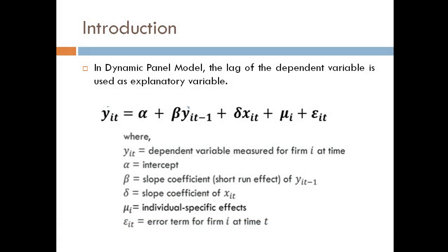In a dynamic panel model, the lag of the dependent variable is used as an explanatory variable. It can be represented as: y_it = alpha + beta * y_i(t-1) + lambda * x_it + mu_i + error term.